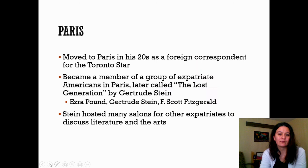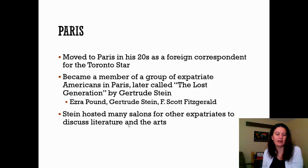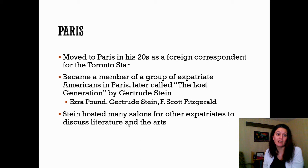He moves to Paris in his 20s as a foreign correspondent for the Toronto Star. He became a member of a group of Americans that lived there called the Lost Generation — including Gertrude Stein, Ezra Pound, and F. Scott Fitzgerald. Stein hosted many get-togethers to discuss literature and the arts, and he enjoyed being part of that.